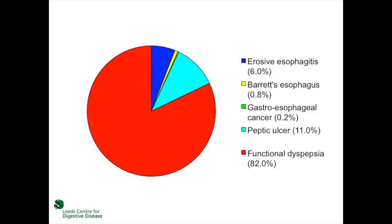After endoscopy, only a minority of people in the community with dyspepsia will be found to have a structural cause for their symptoms, with over 80% being labelled as having symptoms in the absence of an organic explanation. This condition is known as functional dyspepsia.